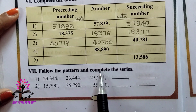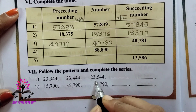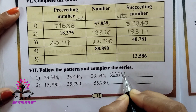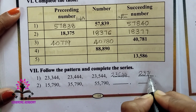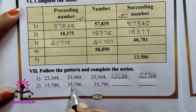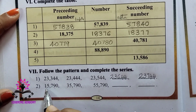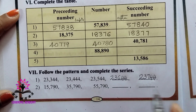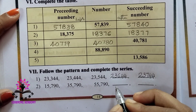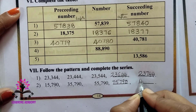Follow the pattern and complete the series. First: 23,344 — 23,444 — 23,544 — next is 23,644, then 23,744. Second: 15,790 — 35,790 — 55,790. Here the difference is 20,000 each time. So next is 75,790, then 95,790.